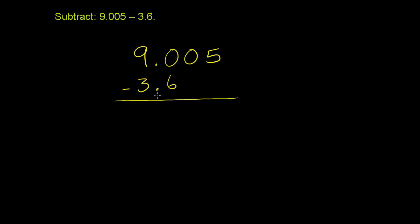So we start up here, we have 5 minus nothing. You could imagine this 3.6, or 3 and 6 tenths, we could add two zeros right here, and it would be the same thing as 3 and 600 thousandths, which is the same thing as 6 tenths. So 5 minus 0 is 5. Then you have 0 minus 0, which is just 0.